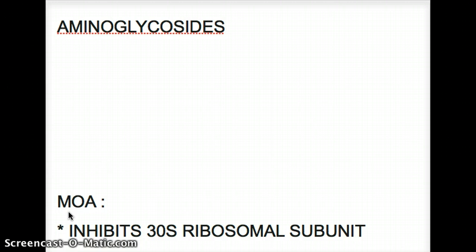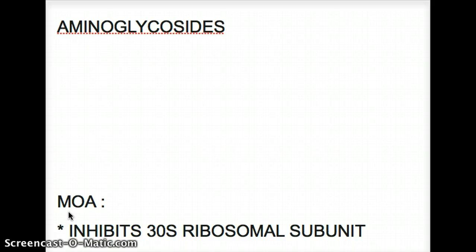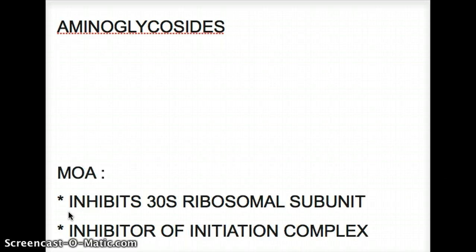Something else also inhibits the ribosomal subunit — we know it by that mnemonic 'Buy at 30.' So A-T: T stands for tetracycline. Tetracycline also inhibits the 30S ribosomal subunit. But how do we distinguish between the two? The main distinction is that aminoglycoside will specifically inhibit the initiation complex, whereas tetracycline inhibits the attachment of aminoacyl-tRNA from its position at the 30S ribosomal subunit. So as soon as you see 'initiation complex,' it's a buzzword — we know it's aminoglycosides. That's very, very important.